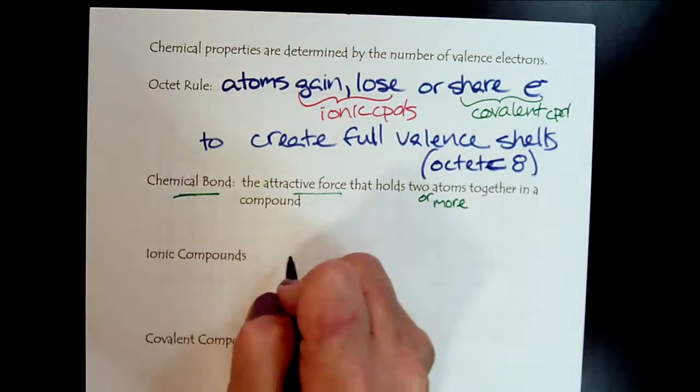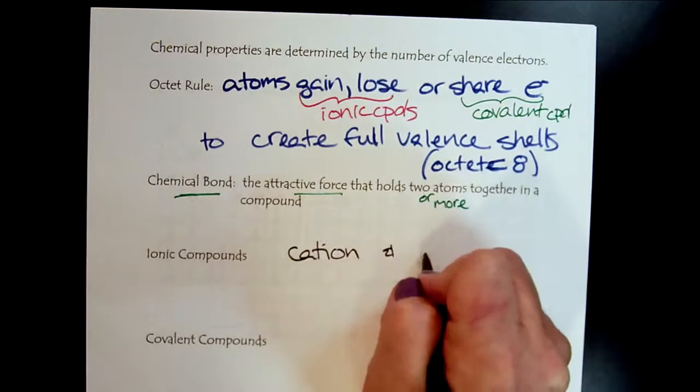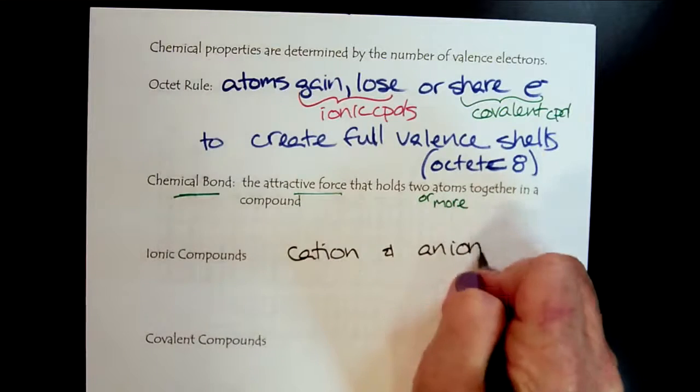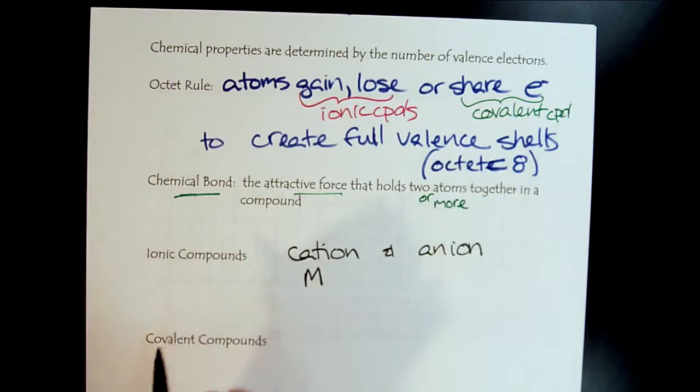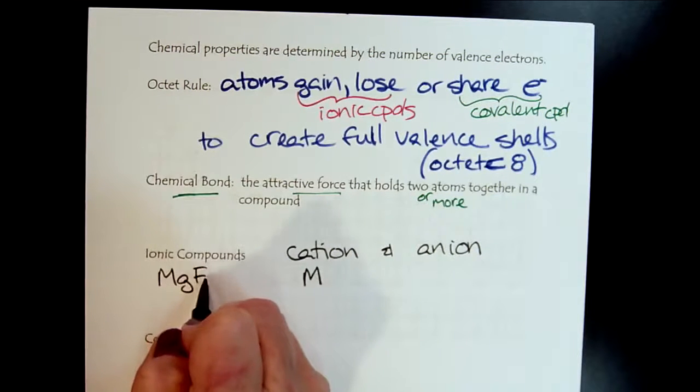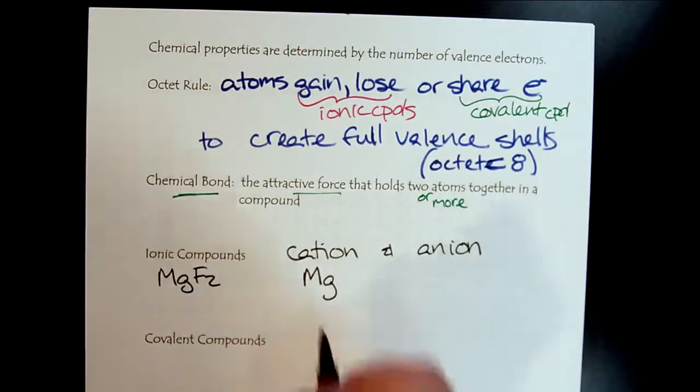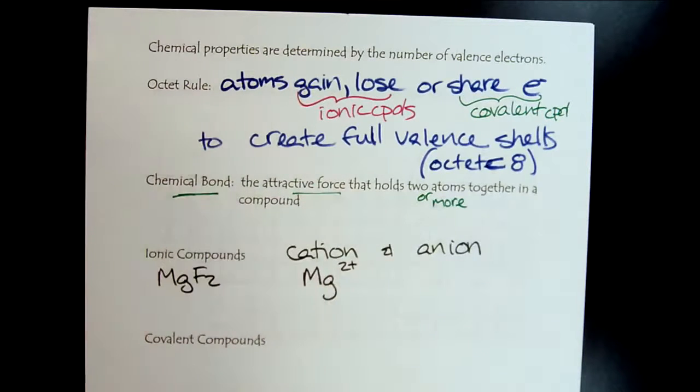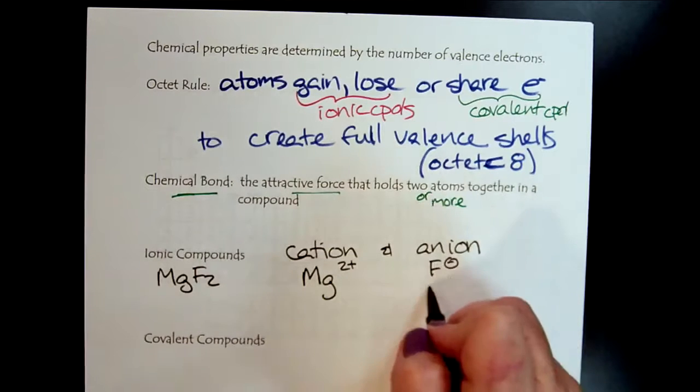Ionic compounds are always going to have a cation and an anion. For example, we could have, let's look, here's magnesium fluoride. Magnesium, group two, alkaline earth. It has a plus two. And so that's why we need two fluorides to balance the charge.